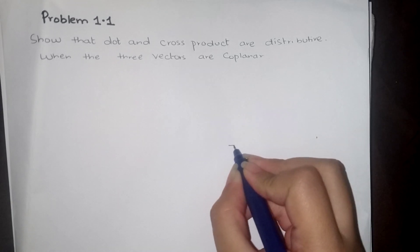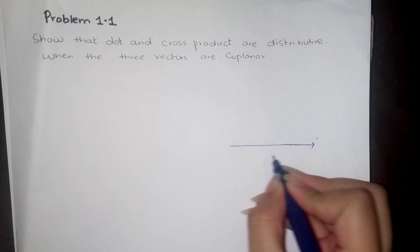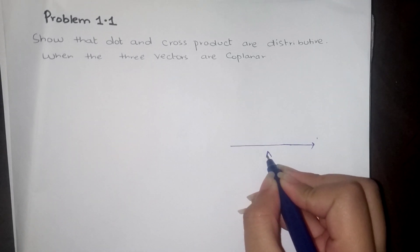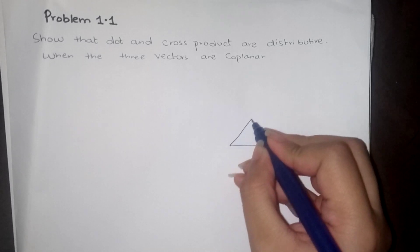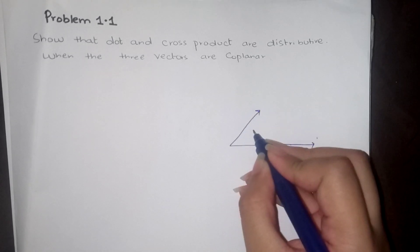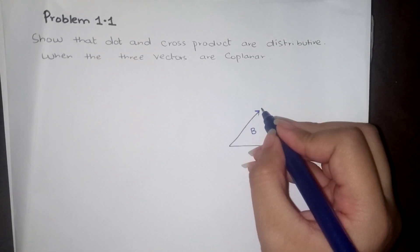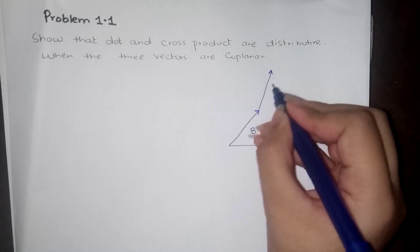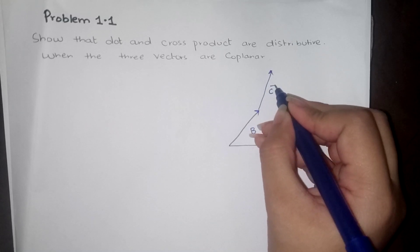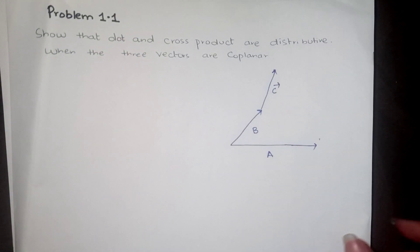I have taken one vector — Vector A, Vector B, and Vector C. These three vectors are co-planar.